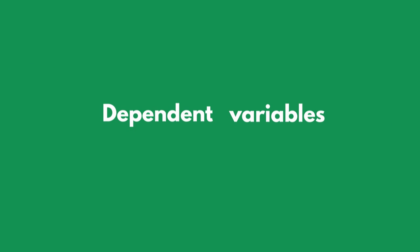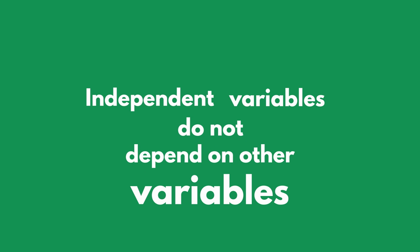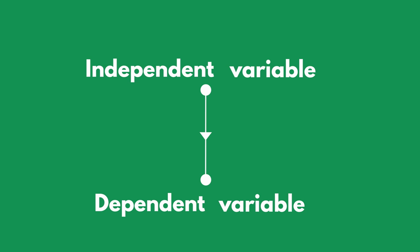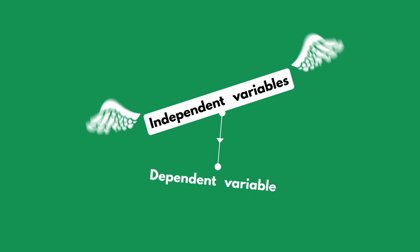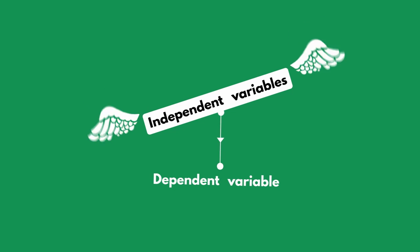Dependent variables depend on other variables to determine their value. Independent variables do not depend on other variables to have a value. We could say that an independent variable can change the values of a dependent variable. In fact, there can be many independent variables that can change the values of a dependent variable, but no other variable can change the value of an independent variable. An independent variable variates its value completely autonomously.